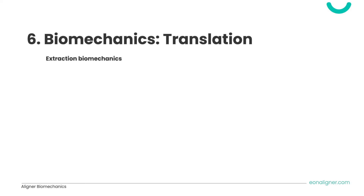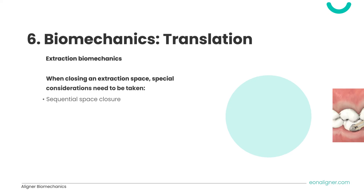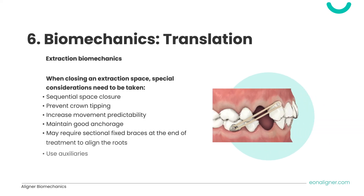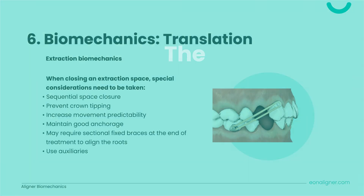Lastly, some special considerations for planning extraction cases: consider sequentially closing space. Prevent crown tipping using proper attachments and continuous monitoring and tracking of the case. Increase movement predictability through proper staging of movements and/or the use of elastics to maintain good anchorage. Treatment may necessitate the use of sectional fixed braces at the end of treatment to align the roots. Thank you for watching.